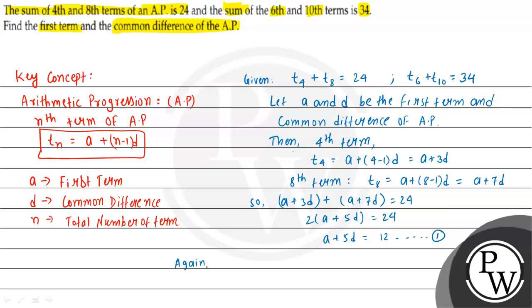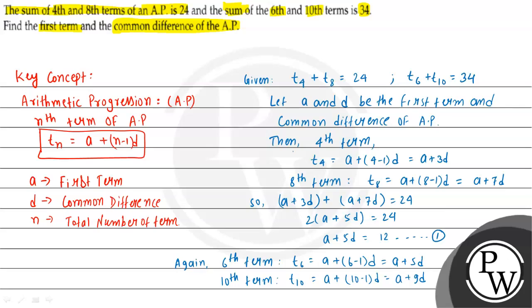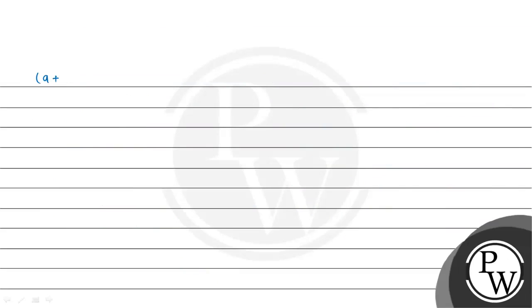Now for the other condition: the 6th term is T6 = A + (6 - 1) × D = A + 5D. The 10th term is T10 = A + (10 - 1) × D = A + 9D. Adding them: (A + 5D) + (A + 9D) = 34, so 2A + 14D = 34.